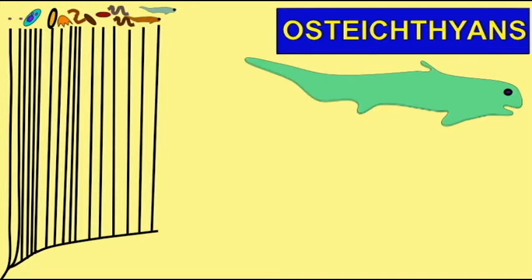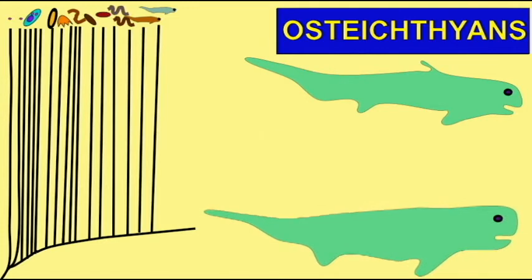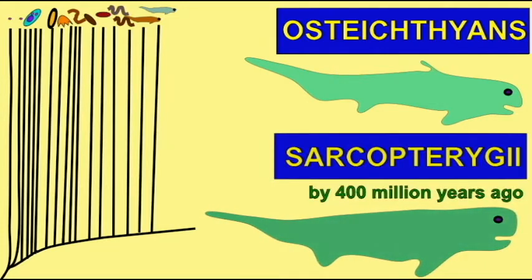Primitive Sarcopterygian fish would develop into a diversity of forms, including one group which would become progressively more and more like amphibians.